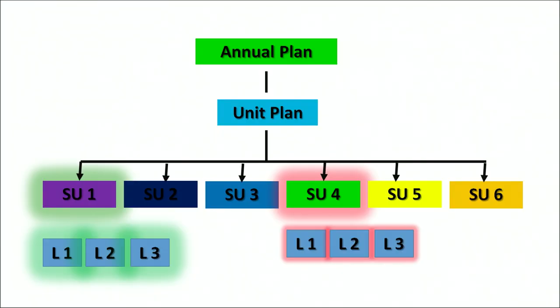Have a look at this graphic — you will see the annual plan at the top. The annual plan looks at units and subunits. The unit plan now looks at detailed subunits — I have subunit 1 to subunit 6 (SU refers to a subunit). Below, you will find L1, L2, L3, which are nothing but lesson plans. L1, L2 and L3 with the green glow are part of subunit 1 (SU1), and another L1, L2, L3 with the orange glow sit under subunit 4 — meaning every subunit further has lesson plans under it.